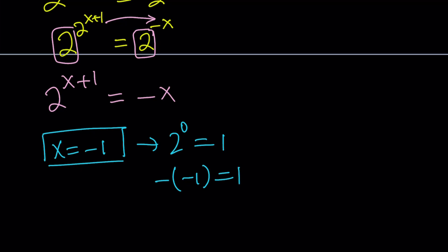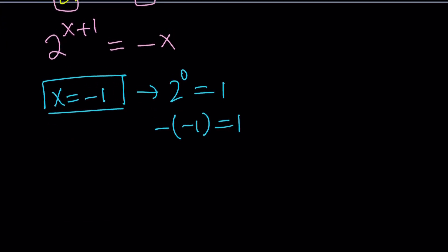So x equals negative 1 works. That is a solution. But how do we go about proving that there are no other solutions? Let's go ahead and talk about that. At least we found one solution, right?